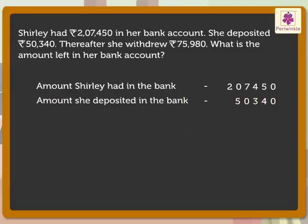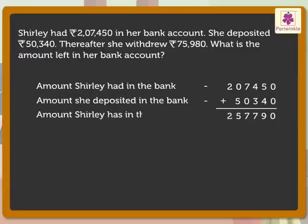Now, let us add these numbers to get the answer. Thus, the total amount Shirley has in the bank is rupees 2,57,790.